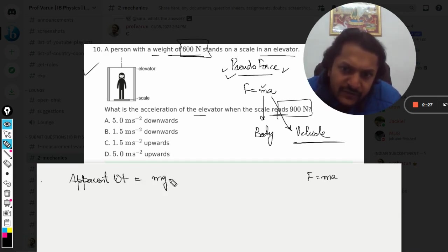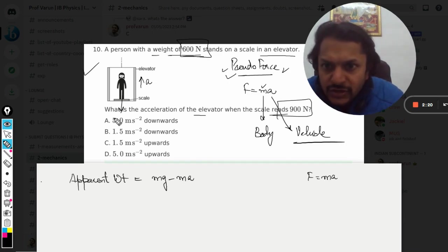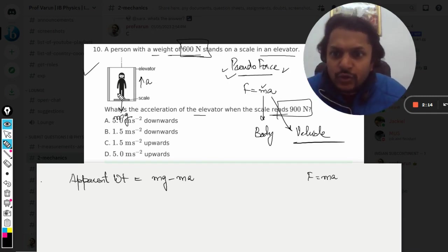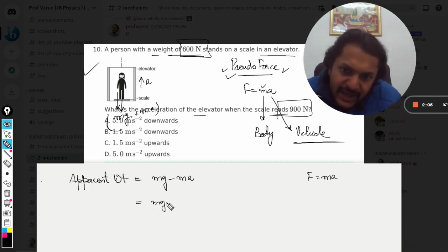So I'm directly jumping to the formulas here. The apparent weight will be mg minus ma. Let's say this lift is going up with an acceleration a, so the weight is mg. And because the acceleration of the vehicle is upward, the pseudo force is going to be downward, so it will be mg plus ma if the acceleration is upwards.